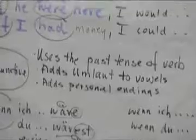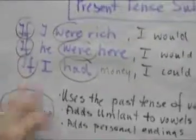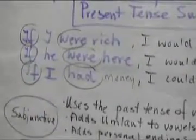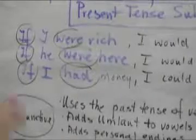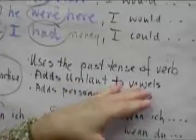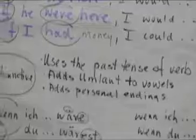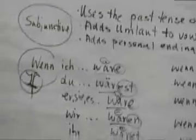subjunctive talks about contrary-to-fact situations. It's called the present tense subjunctive because it has present tense meaning. Wenn always is translated as if. If I were, if I had. You use the past tense form of the verb. You add umlauts to vowels in the verb. And you add the personal endings. If you have a regular verb, like studieren, lernen, tanzen, then you combine it with a form of würde and you use the infinitive of the verb.